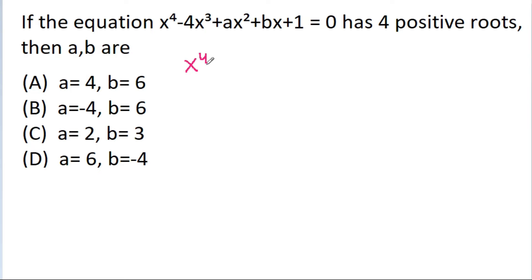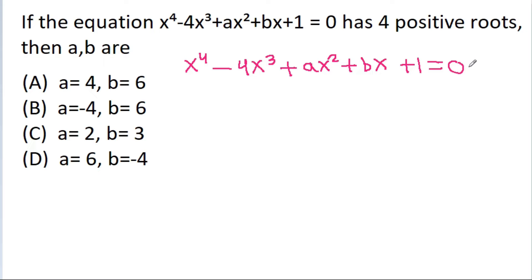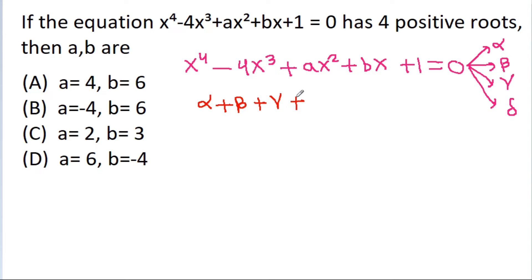The given equation is x⁴ - 4x³ - ax² - bx - 1 = 0. Suppose the roots are alpha, beta, gamma, and delta. The sum of roots alpha + beta + gamma + delta equals -(-4) = 4, and the product of roots alpha·beta·gamma·delta equals 1.